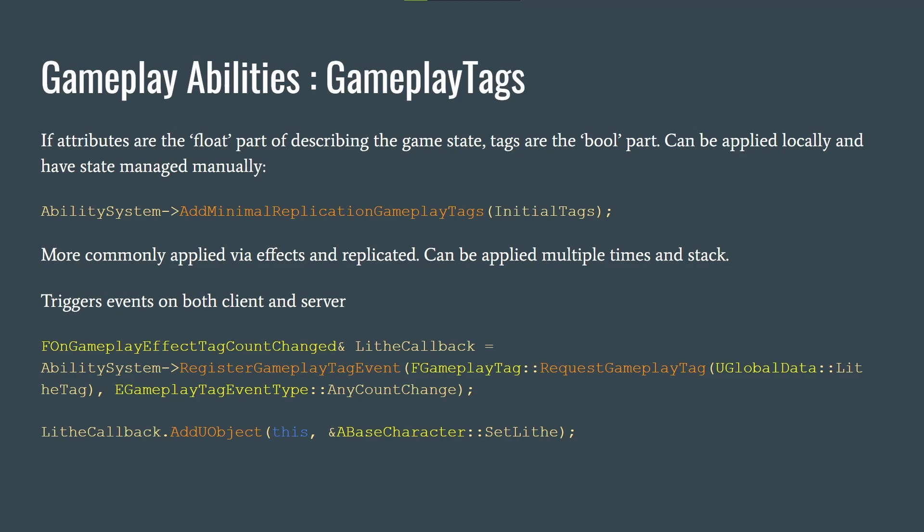There's a nice resource in the Lyra Starter Game where they use tags to track ammo for weapons, which is pretty cool. Tags trigger events on both clients and server. There's an FOnGameplayEffectTagCountChange callback you can register to — so when a tag is added that slows you, you can display a pop-up letting the player know they're slowed. You bind to that callback and run code whenever it's triggered.